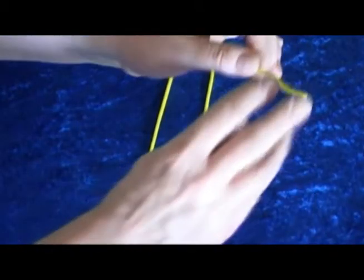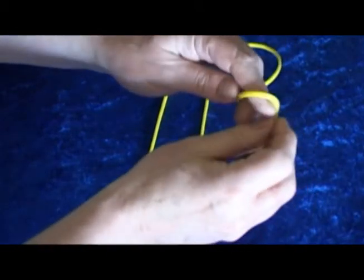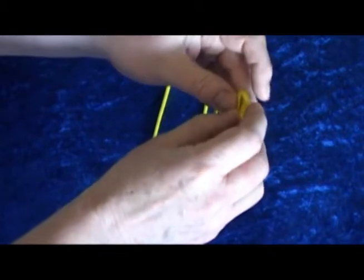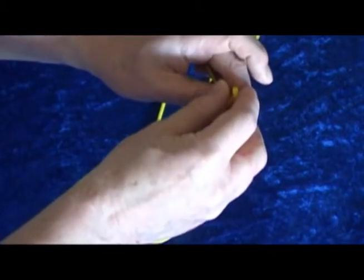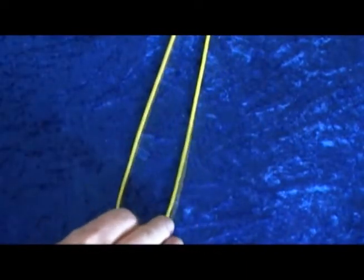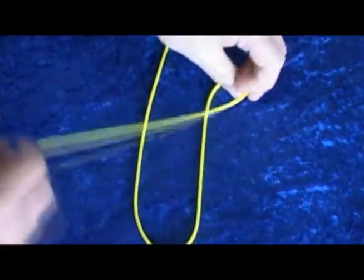I'm tying a simple overhand knot in one of the ends that I'll be working with. It doesn't matter which end, but I'll do it on the right hand one here. With the two ends away from me, I'll take the one with a knot in it and make a loop before taking the end over the tail to the other side.